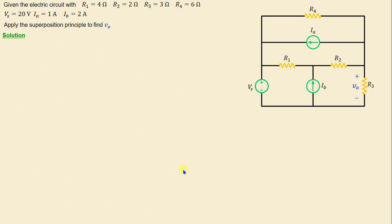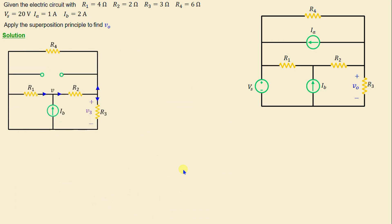Now let's consider the independent current source Ib active, with the independent voltage source Vs replaced by a short circuit and the independent current source Ia replaced by an open circuit. In order to calculate the voltage V3 across R3, we apply the nodal analysis method.